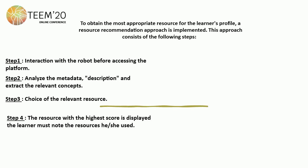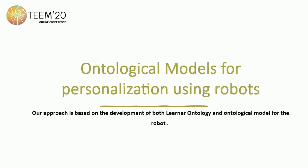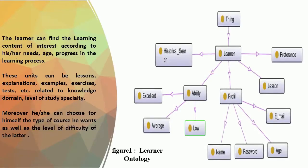Let's move on to the ontological model for personalization using robots. Our approach is based on the development of both a learner ontology and an ontological model for the robots. The learner ontology is modeled in terms of several characteristics such as name, password, age, preference, and competency profile, and also specifies the relationships between those components.